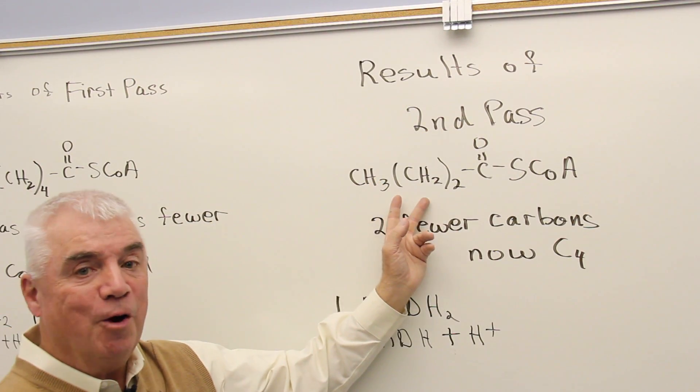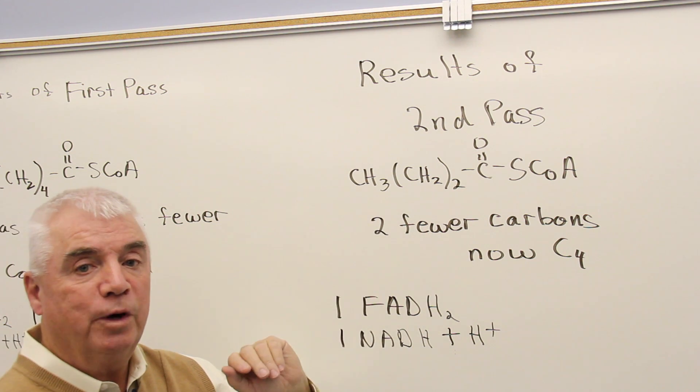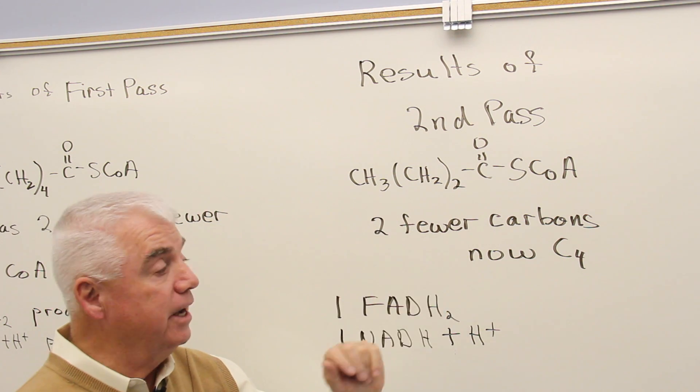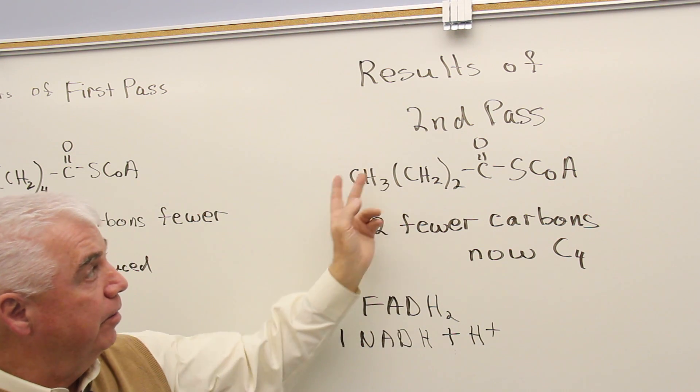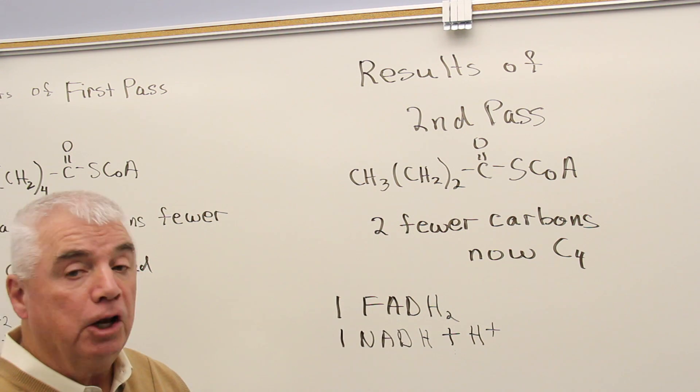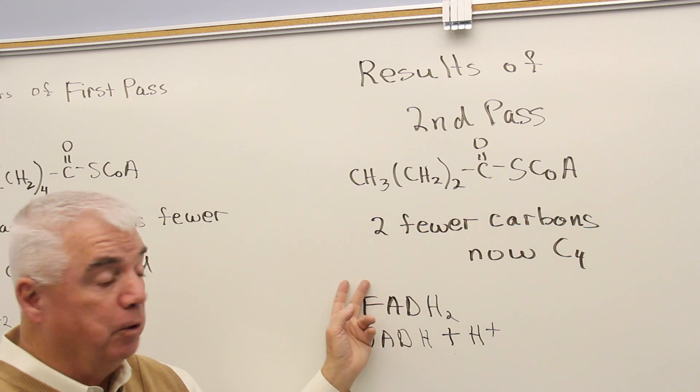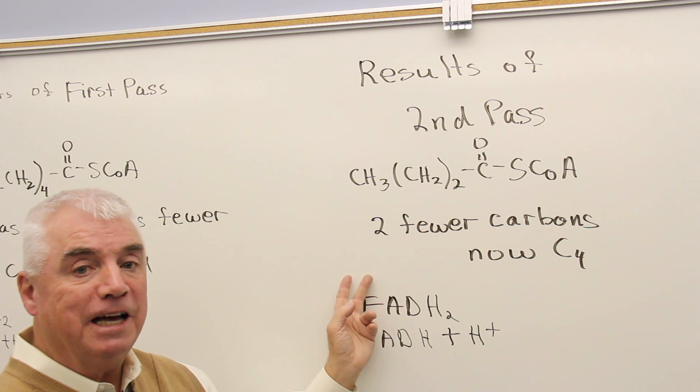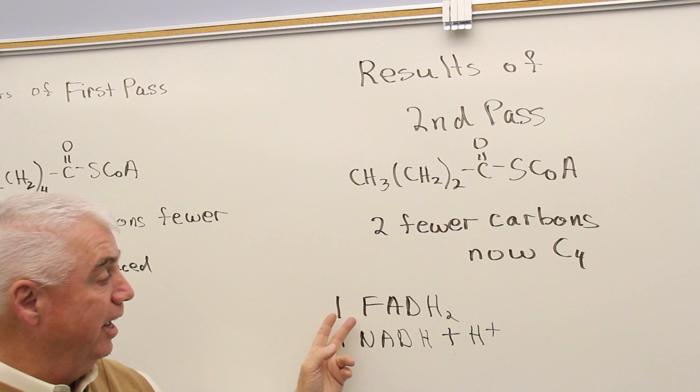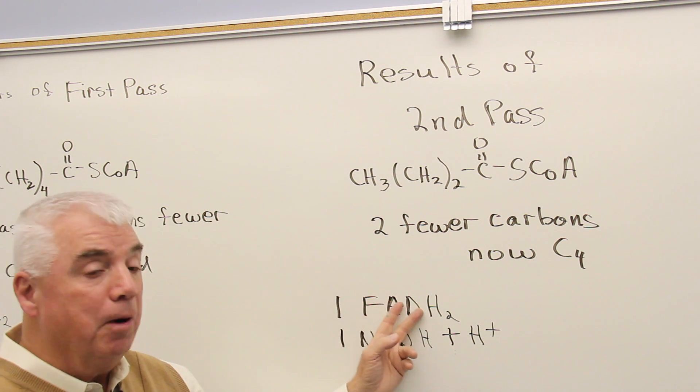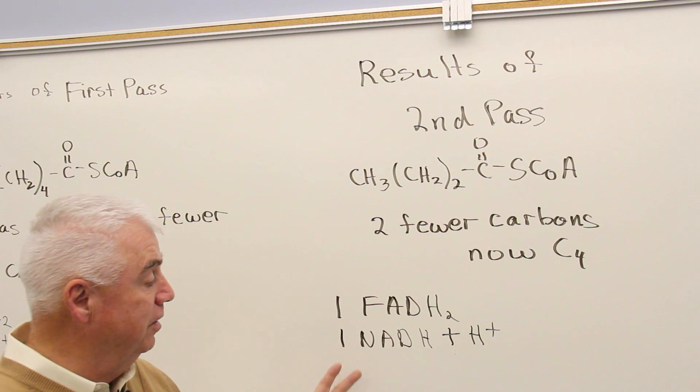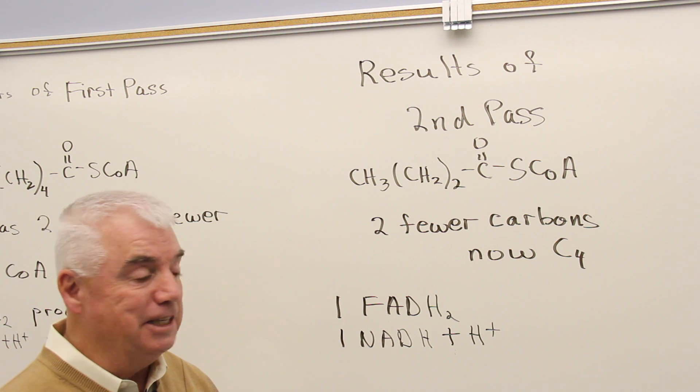Let's look at the second pass. We've got two fewer carbons again. We started with a C8, went to a C6, now we have a C4. And again, those two carbons that have been lumped off - I didn't write it here, but we've got another molecule of acetyl CoA. And because we went through the series of four reactions, we've got another molecule of FADH2, and another molecule of NADH.